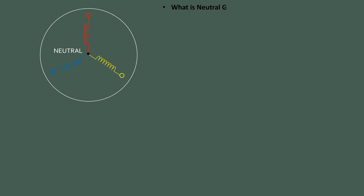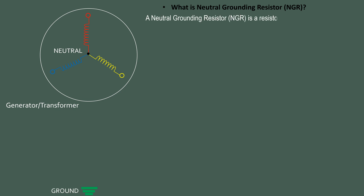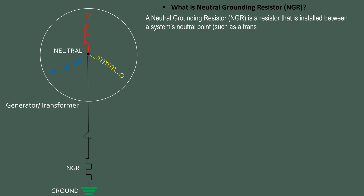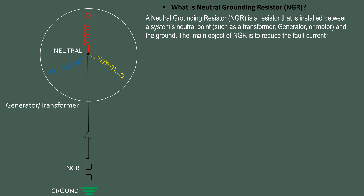What is a Neutral Grounding Resistor (NGR)? A Neutral Grounding Resistor NGR is a resistor that is installed between a system's neutral point — such as a transformer, generator, or motor — and the ground. The main objective of NGR is to reduce the fault current flowing through the neutral line when a ground fault occurs.